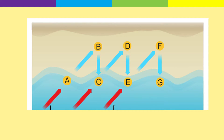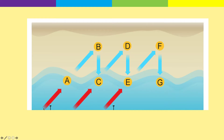Longshore drift is difficult to get your head around, but once you do you'll understand why it happens. If we imagine my cursor is a piece of sediment — a pebble — it starts off at this arrow here. Because of the prevailing wind direction, the swash up the beach moves in this direction, at about one or two o'clock on a clock face, so the swash takes the pebble up the beach that way.